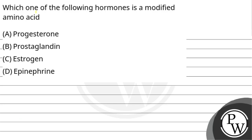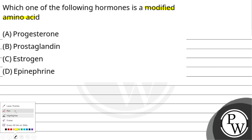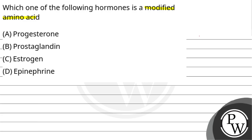Hello guys, let's see the question: which one of the following hormones is a modified amino acid? Option A, progesterone. Option B, prostaglandin. Option C, estrogen. And option D, epinephrine.